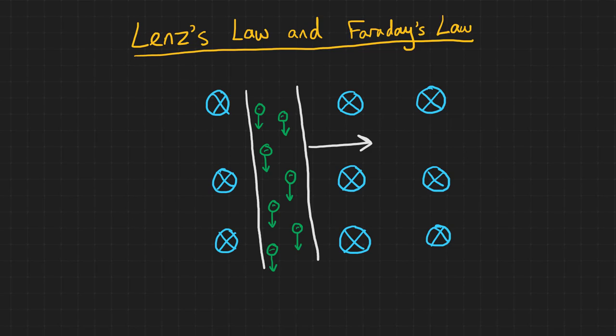With our field still acting into the screen, that results in a force on the wire acting to the left. In other words, opposing the force that we're applying to move it through the magnetic field. The harder we push on the wire, the more current is induced, and therefore the bigger the force we have to overcome. We have to do work against this force, so energy is conserved.